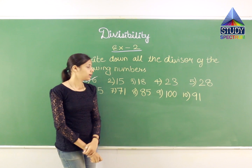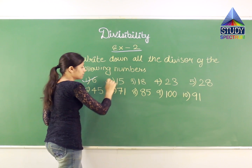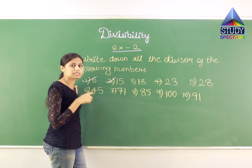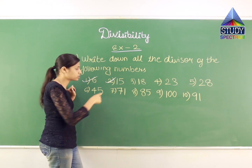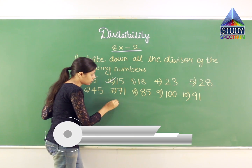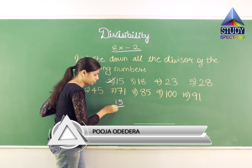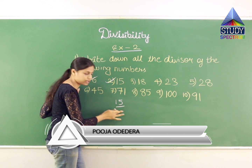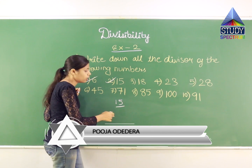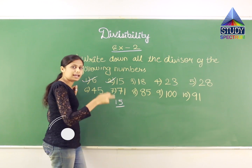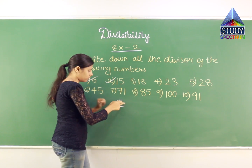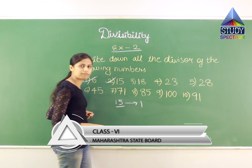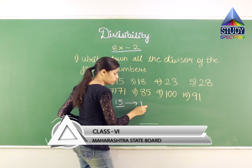Now let us start with the second question. Same as the previous question, we have to find all the possible divisors for the number 15. Divisors mean something which comes in the denominator. As I said, 1 is a divisor for all numbers, so I will write 1 first.